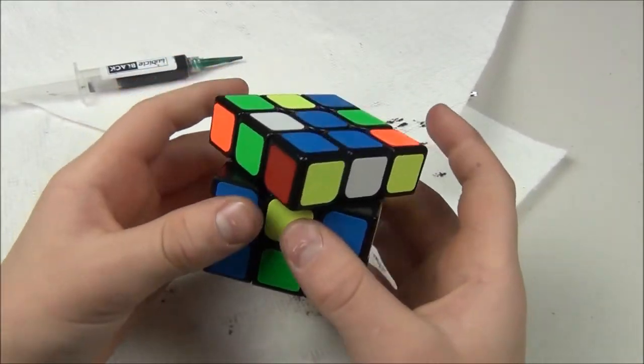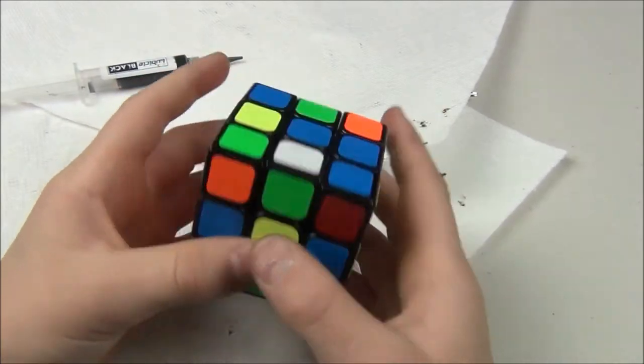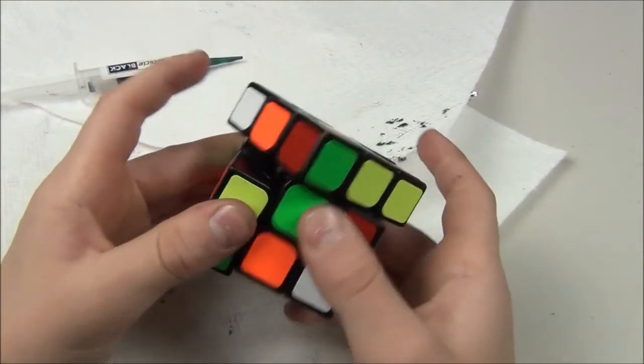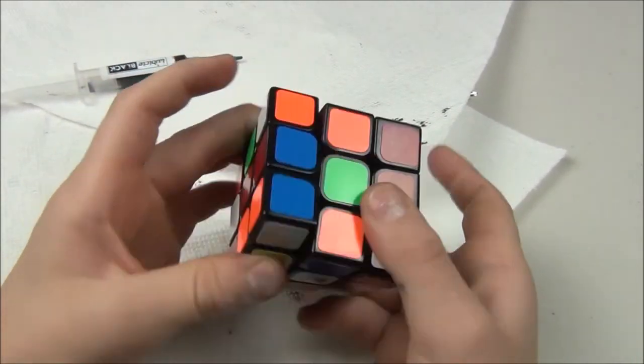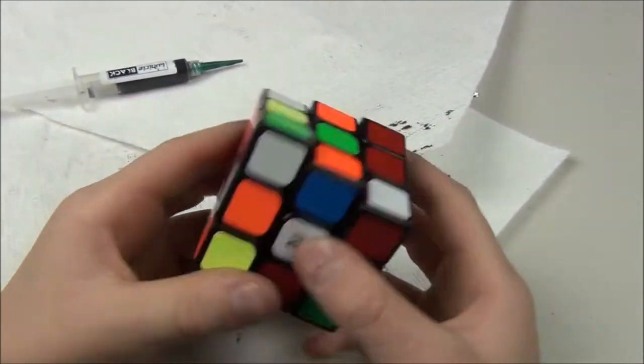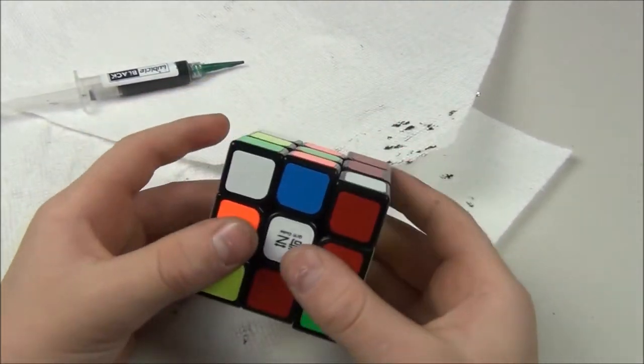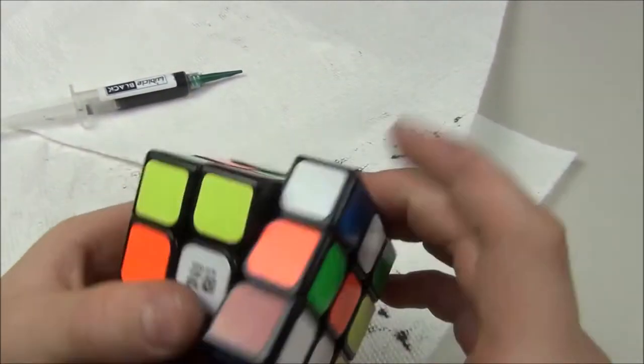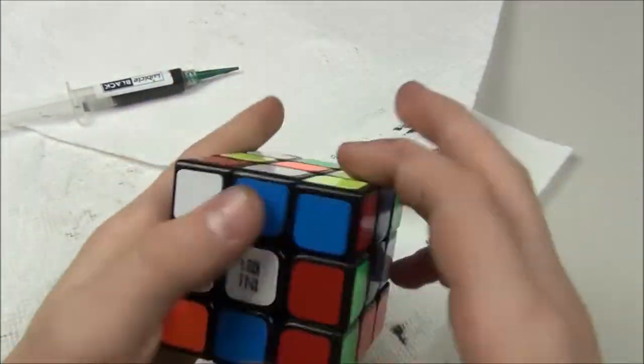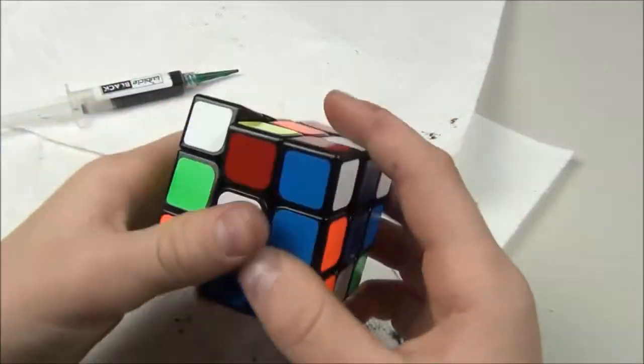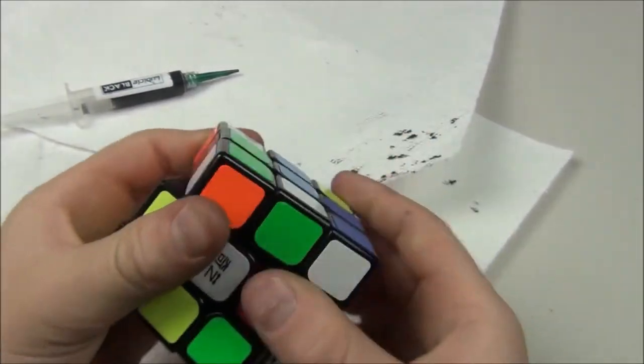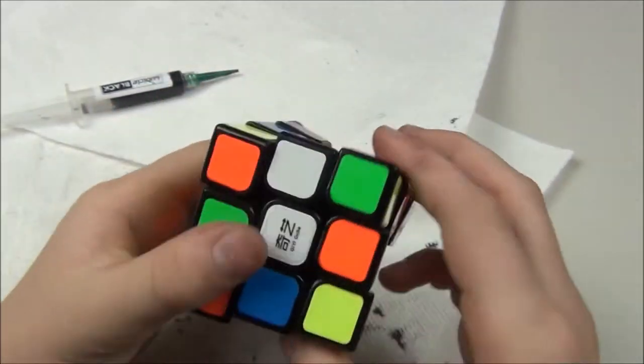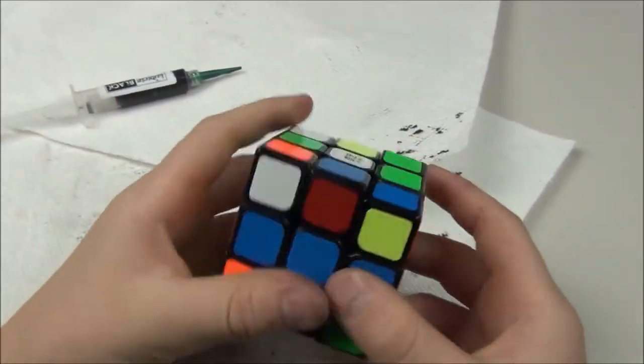Let's see. It even improved the corner cutting. I know that I tensioned this cube pretty much the same and it even improved the corner cutting. Wow. It just feels so much nicer of quality. It's so much faster. It's so much smoother. I had no idea that lubing a core could do so much to a puzzle.